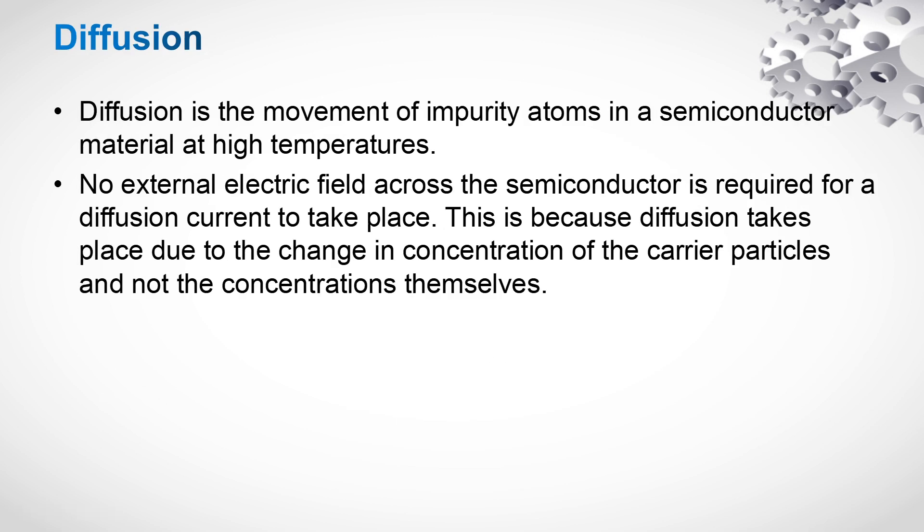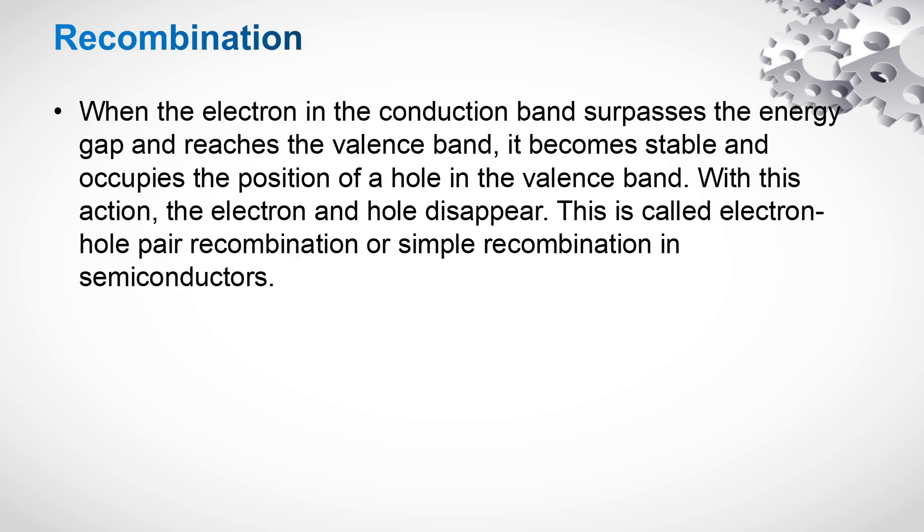Diffusion. When P-type and N-type semiconductors are taken, in N-type there are donor impurity levels, in P-type there are acceptors. Diffusion is a movement of impurity atoms in a semiconductor material at high temperatures. No external electric field across the semiconductor is required for diffusion. This takes place due to the change in concentration of the carrier particles and not the concentrations themselves.